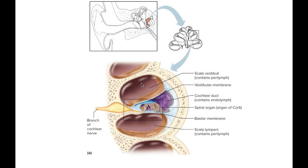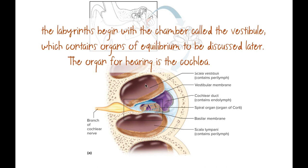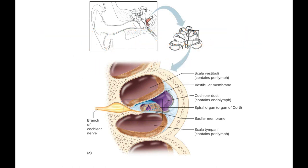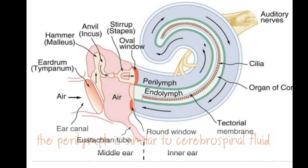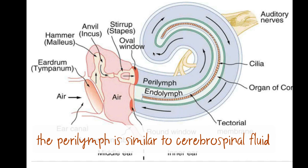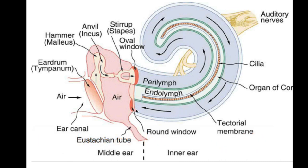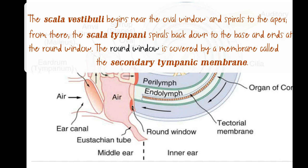The top cavity is called the scala vestibuli, the middle is the cochlear duct, and the bottom is the scala tympani. Both the scala vestibuli and scala tympani contain perilymph — 'peri' meaning outside covering — while the fluid inside the cochlear duct is called endolymph. The sound wave travels through the perilymph, spirals all the way around the cochlea like the cinnamon roll analogy, reaches the cochlear cupula, turns around, and continues as one continuous tube.